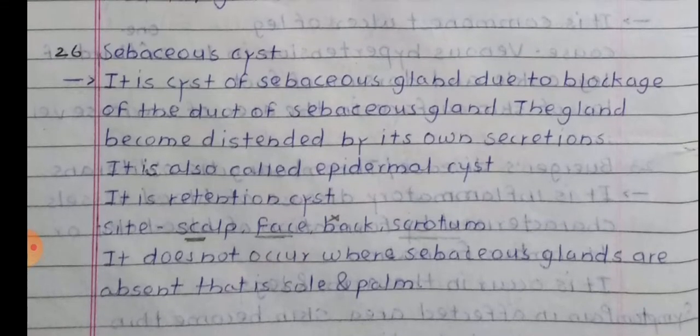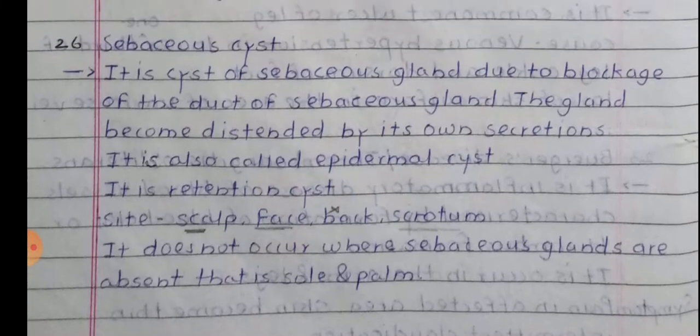Sebaceous cyst: It is a cyst of the sebaceous gland due to the blockage of the duct of the sebaceous gland. The gland becomes distended by its own secretions. It is also called epidermal cyst and is also known as retention cyst. The common sites are scalp, face, and scrotum. It does not occur where sebaceous glands are absent, i.e., the sole and the palm.